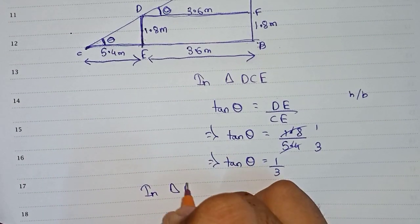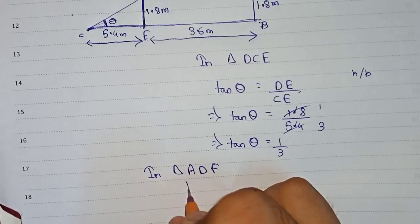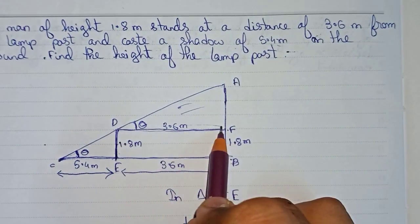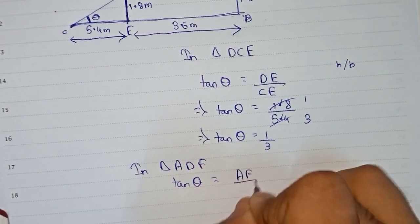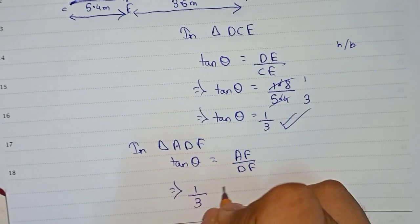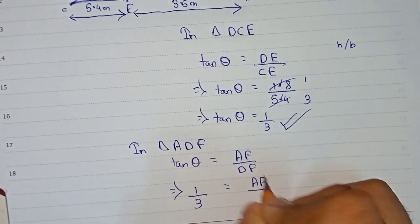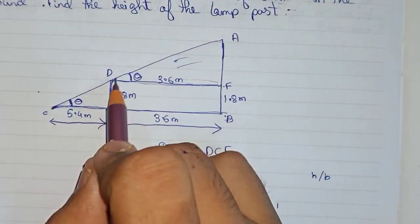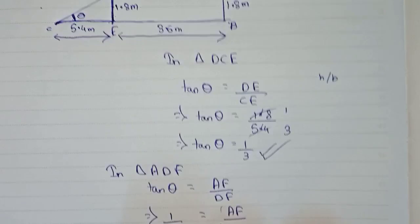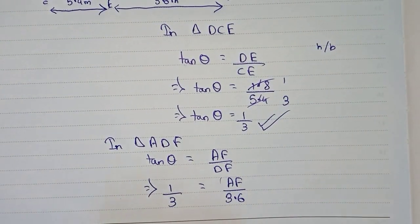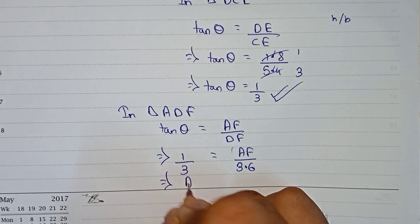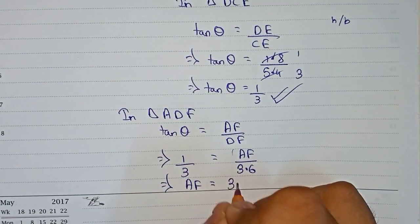In triangle ADF, tan θ equals AF divided by DF — height by base. AF is the height and DF is the base. We already know tan θ is 1/3, so we write 1/3 equals AF divided by DF. The value of DF is 3.6 meter, so: 1/3 equals AF divided by 3.6.